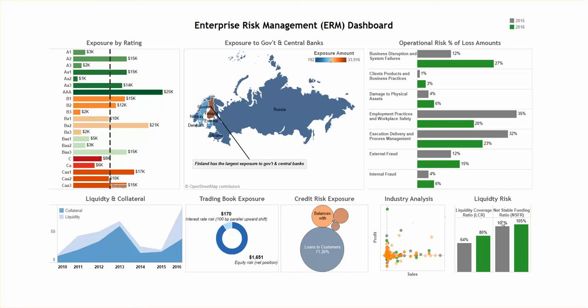Lastly, we have Liquidity Risk. Here we have the gray bars representing 2015 and the green representing 2016. We are showing the percentage of liquidity coverage ratio (LCR) and the net stable funding ratio over those two periods.